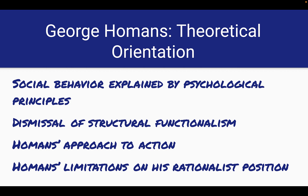Moving on to Homans' theoretical orientation, he looks at how all social behavior — whether in large-scale organizations or collectivities — is best explained on the basis of individual psychological principles. He dismissed structural functionalist theory and contested Durkheim's idea that social order arises out of shared beliefs, values, norms, and practices. Instead, Homans argued that social order is the unintended consequence of individuals engaged in a process of give-and-take, depending on the rate of profit, which can lead to either repeated exchanges resulting in social stability, or the pursuit of alternative behaviors resulting in social change.